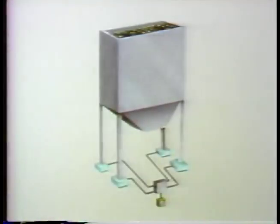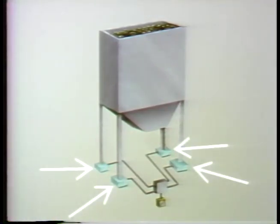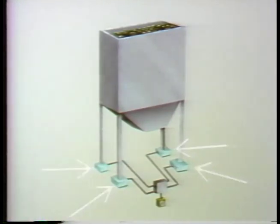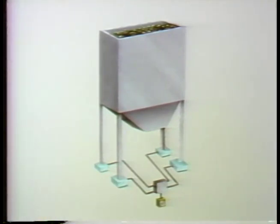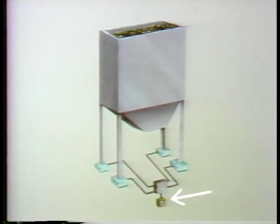Here's a simplified diagram showing how load cells are used. Here is a bin containing coal, and here are four load cells. A load cell is nothing more than a sophisticated scale that measures weight. They're installed so that they measure the weight of the bin and its contents. The weight on all four cells is added together by a summing device, which calculates a level measurement and displays it on an indicator.